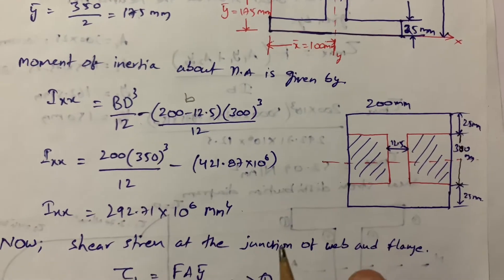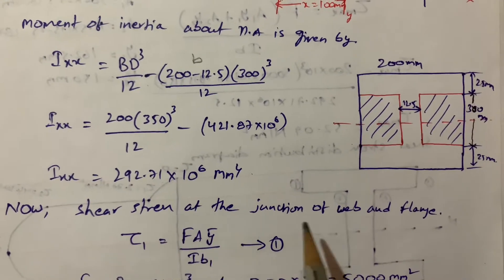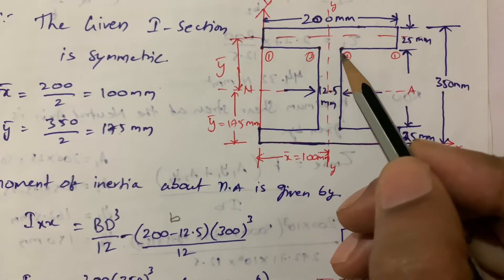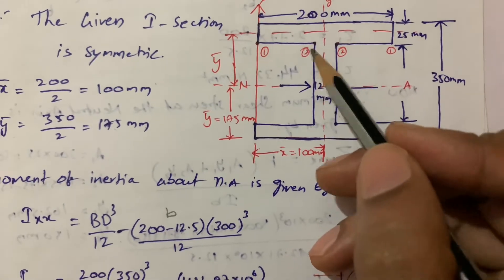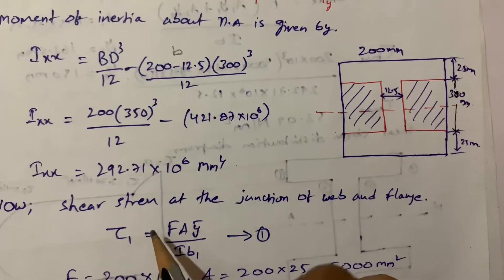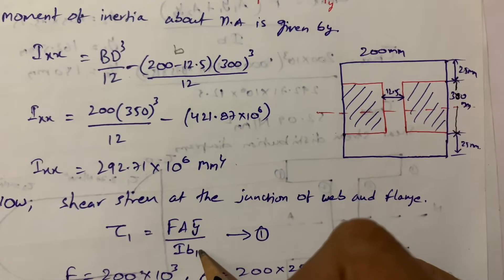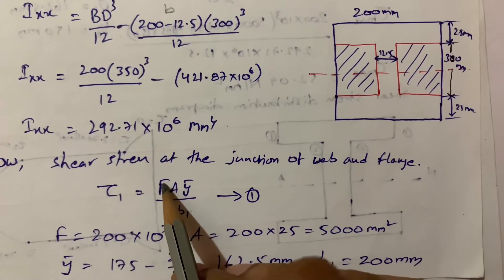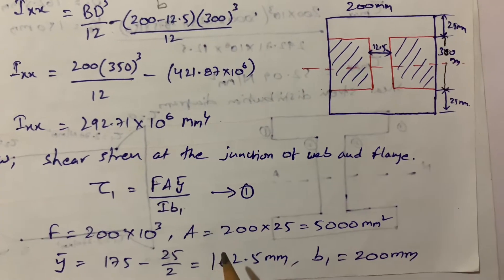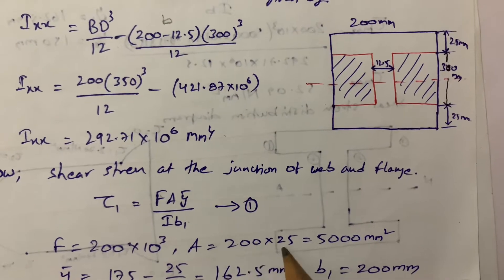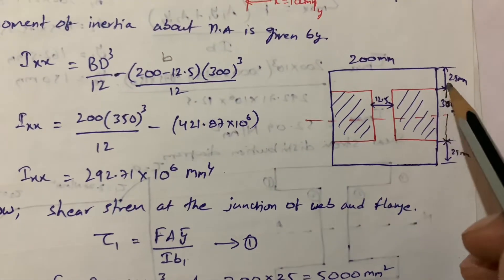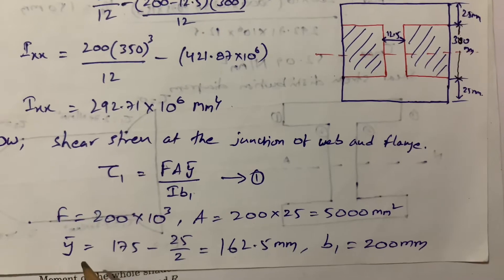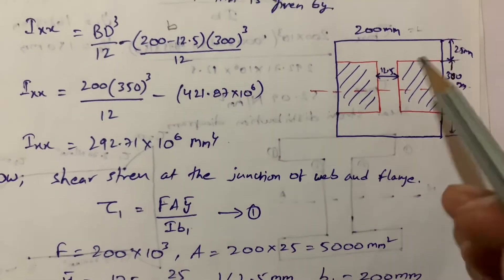Next, we calculate shear stress at the junction of the web and flange — these are the junction points where the web meets the flanges. The formula is τ₁ = F·A·ȳ / (I·b₁). The shear force F = 200 kilonewtons as given. The area A = 200 × 25 = 5000 mm².